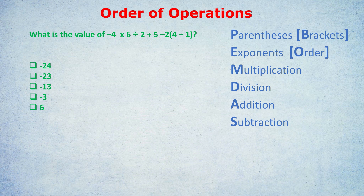The second question: what is the value of negative 4 times 6 divided by 2, plus 5, minus 2 in brackets times (4−1)? Try it yourself if you're feeling confident. First, following PEMDAS, parentheses come first. The only bracket contains 4 minus 1, which is 3.